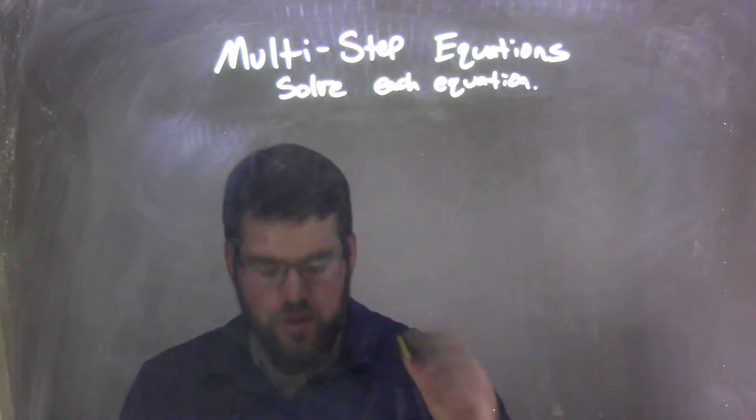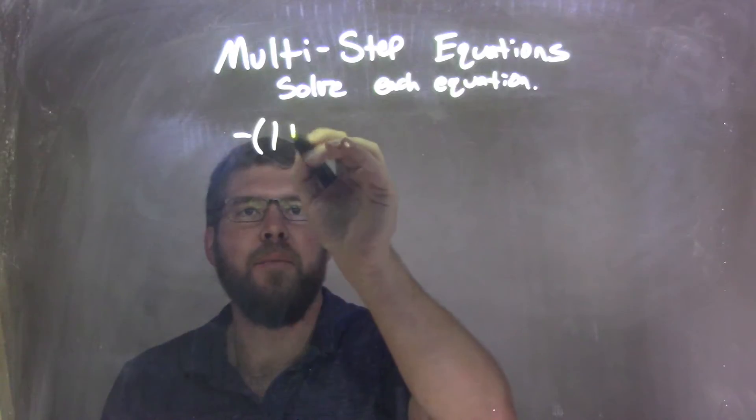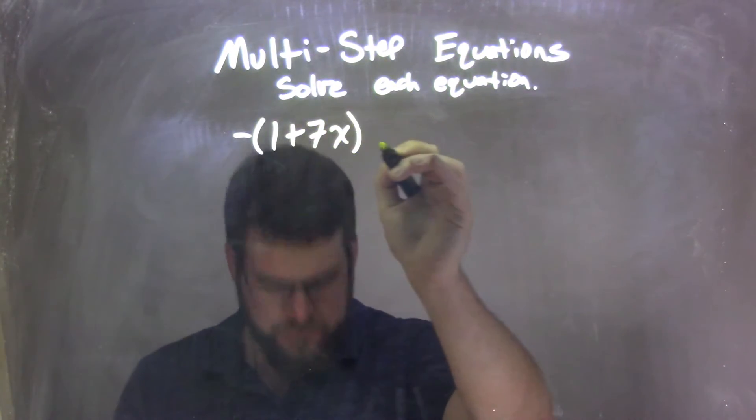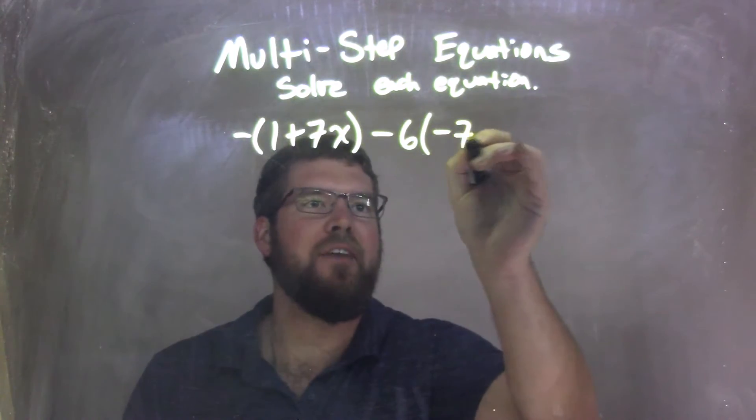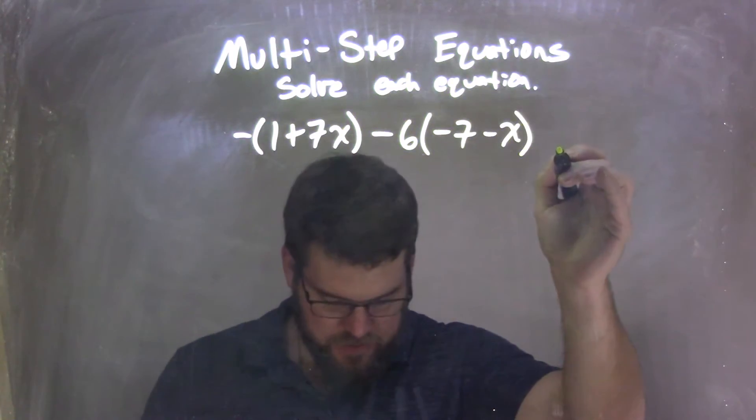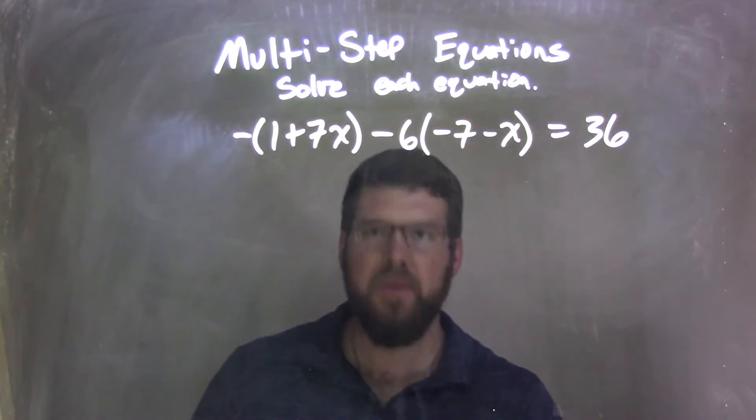So if I was given this equation: negative parentheses 1 plus 7x, minus 6 times parentheses negative 7 minus x, equals 36.